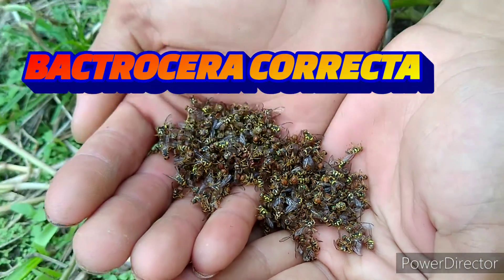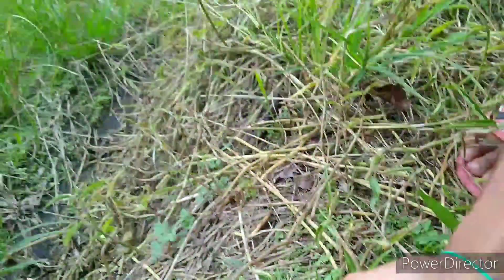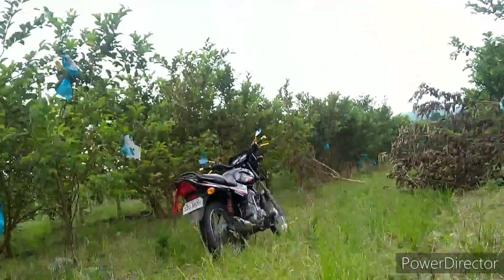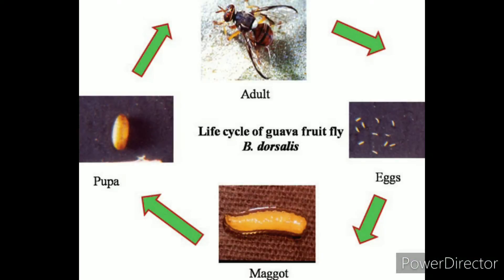These species belong to the family Tephritidae. There are four stages to the life cycle of fruit flies: eggs, larvae or maggots, pupae, and adults.